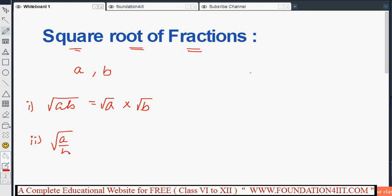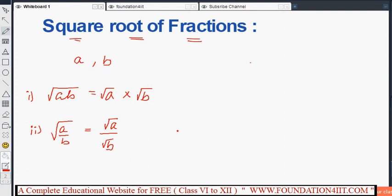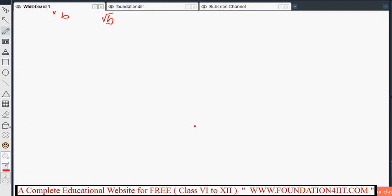We can write using these two formulas and properties to find out the square root of fractions. A and b are any two positive real integers. The question asks to find the square root of 441 by 1849.